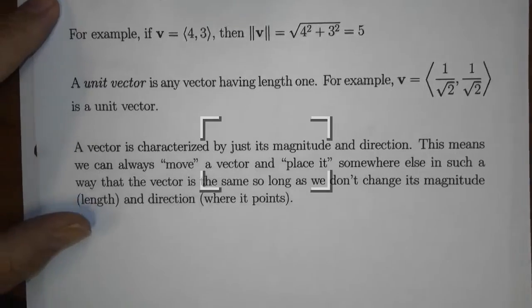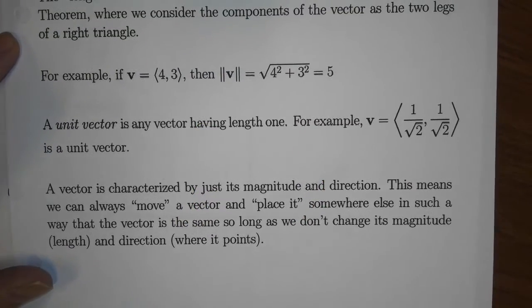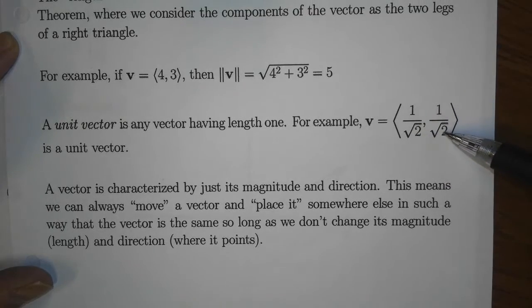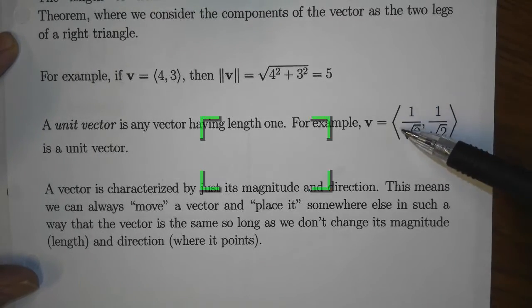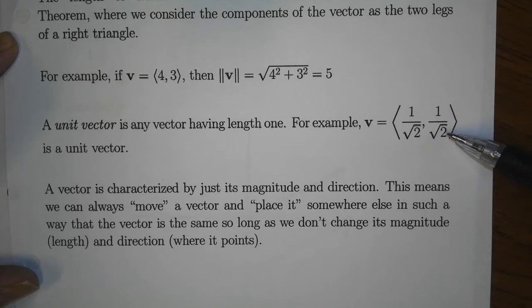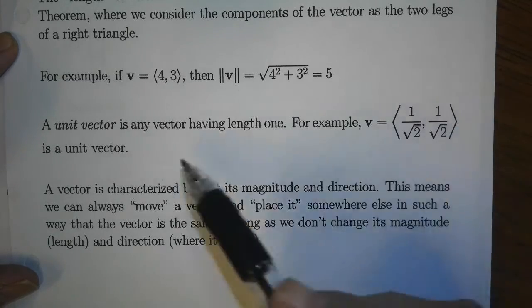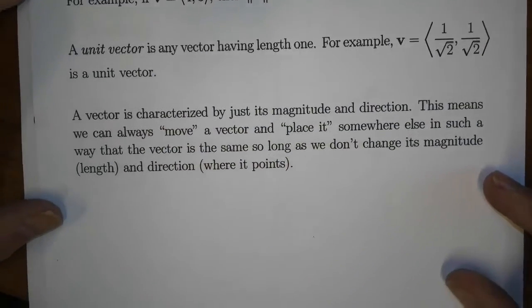A unit vector is a vector having length 1. For example, the vector ⟨1/√2, 1/√2⟩ is a unit vector. If you square 1/√2, you get 1/2; square it again, you get 1/2; add the two together, you get 1; and the square root of 1 is 1. We'll be using unit vectors a lot in multivariable calculus.